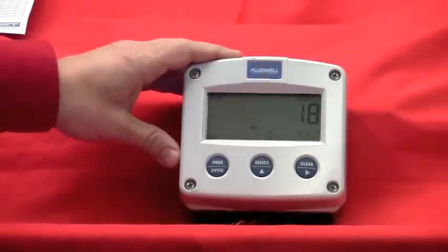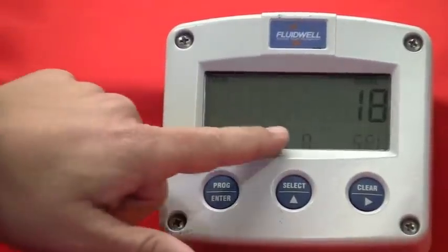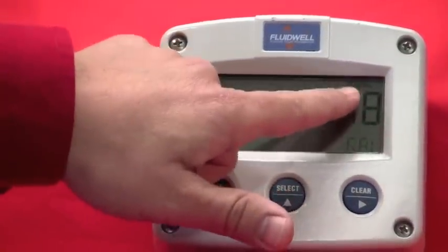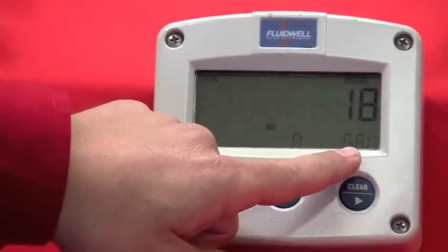This is your typical operating screen here. We're going to cover the LCD and what it's telling you. Right now it's indicating we're in the run mode. This is your total in U.S. gallons, and then we also have flow rate indication here in gallons per second.